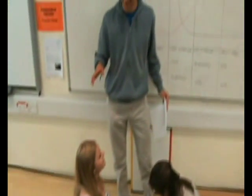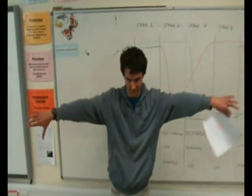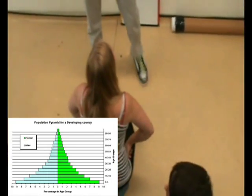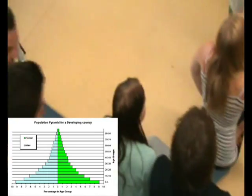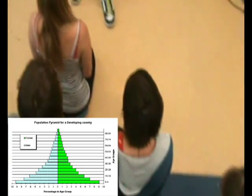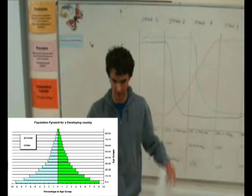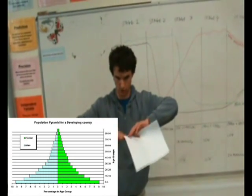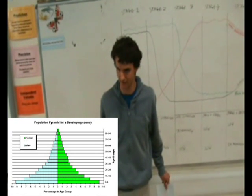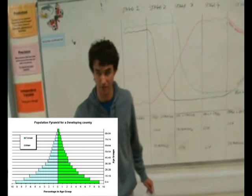Now we're going to do an increasing population, which needs a flatter base to the triangle. With a flat base, we can see that in the population there are more children, so the birth rate is increasing. This is typical for LEDCs such as in Africa, where the population pyramid is quite flat at the base. That's an increasing population shown on the population pyramid.